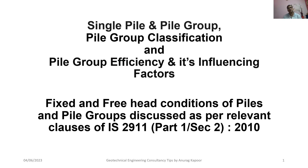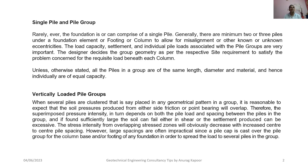Regarding single pile and pile group: rarely ever can a foundation comprise of a single pile. Generally there are minimum two to three piles under a foundation element or footing or column to allow for misalignment or other known or unknown eccentricities. The load capacity, settlement, and individual pile loads associated with pile groups are very important. The designer decides the group geometry as per the site requirement, and unless otherwise stated, all piles forming the group are of the same length, diameter, and material, and hence individually are of equal capacity.